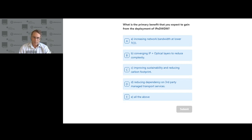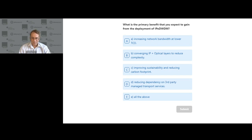Looking at the poll results: 50% selected all of the above, showing all these benefits are resonating with a solid half of the audience. Among those picking just one, reducing complexity stands out as the single most important benefit. Sterling noted he's a little surprised, and mentioned he's also curious how much sustainability is going to start playing into optical transport discussions, which has not generally been a focus in the telecom market.